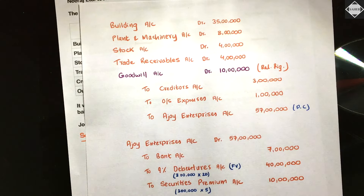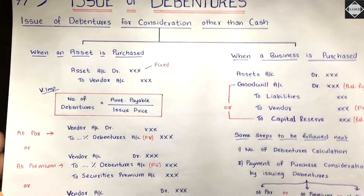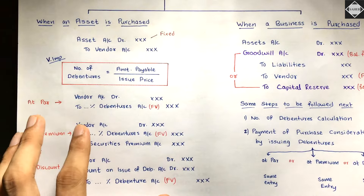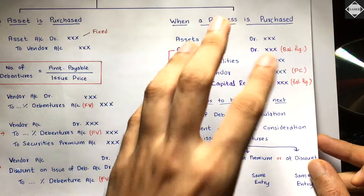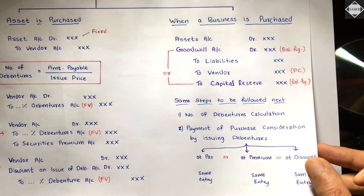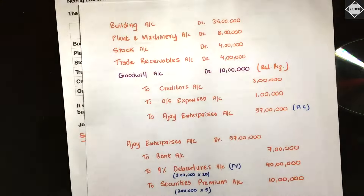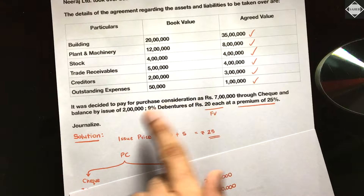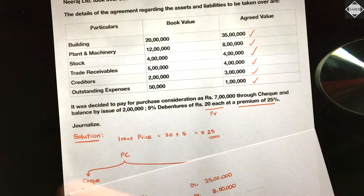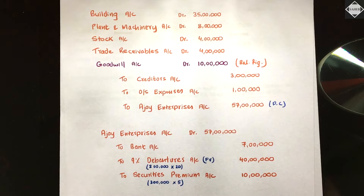We have now discussed the entire concept of issue of debentures for consideration other than cash — covering all journal entries with examples, including the comprehensive question involving partial cash payment. That's all for this video; see you in the next one.